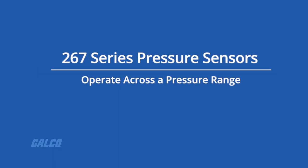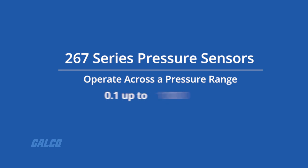267 series pressure sensors operate across a pressure range from 0.1 inches water column up to 100 inches water column.